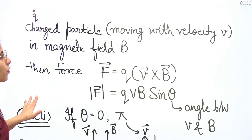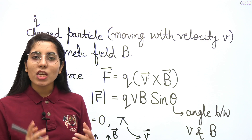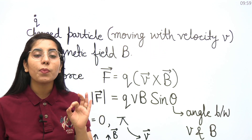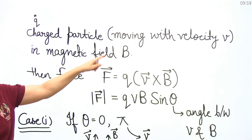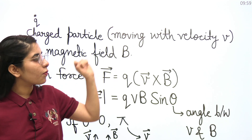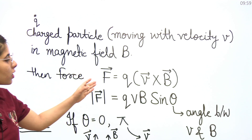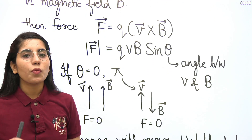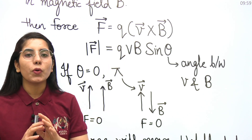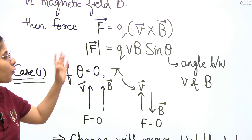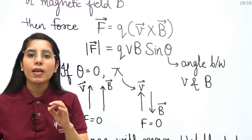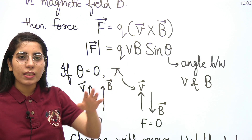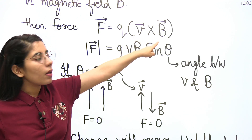Now let's talk about the discussion for this session. If there is a charged particle having charge Q, moving with velocity V in the presence of magnetic field B, what will be the force acting on the particle? That will be the Lorentz force, which is Q V cross B. If I write the magnitude of force, it will be QVB sine theta. Theta here is the angle between V and B — the angle between the direction of motion and the magnetic field.